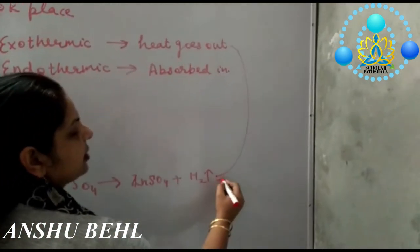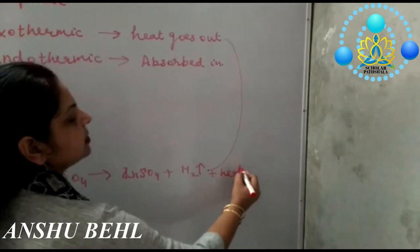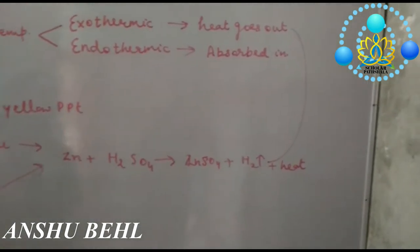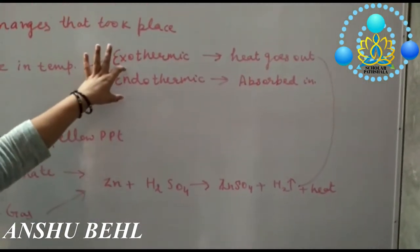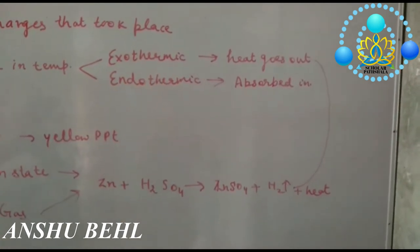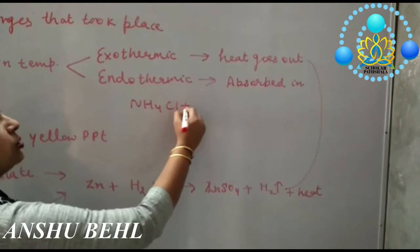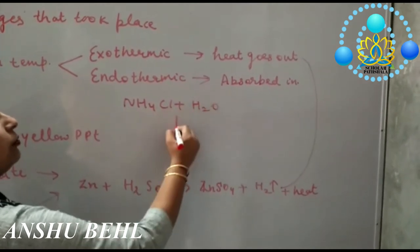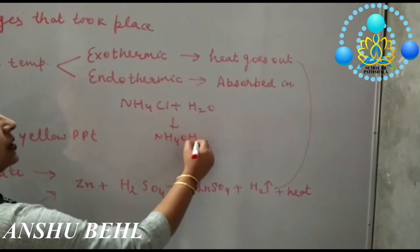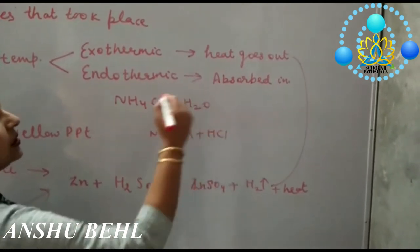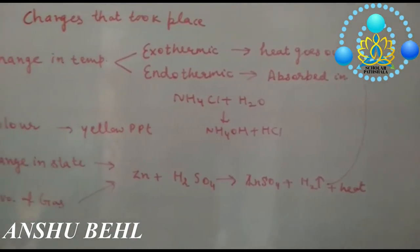In this reaction we mentioned that heat is evolving out. The reactions in which temperature decreases, like if you take ammonium chloride dissolved in water, it forms ammonium hydroxide plus HCl. This is example of endothermic reaction.